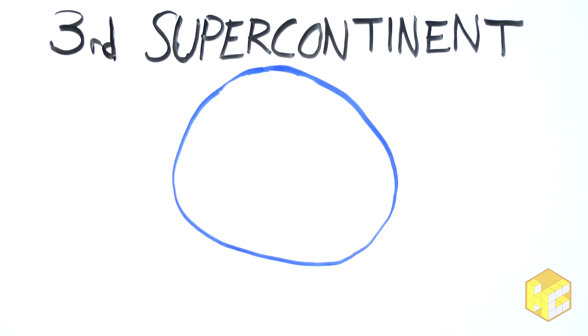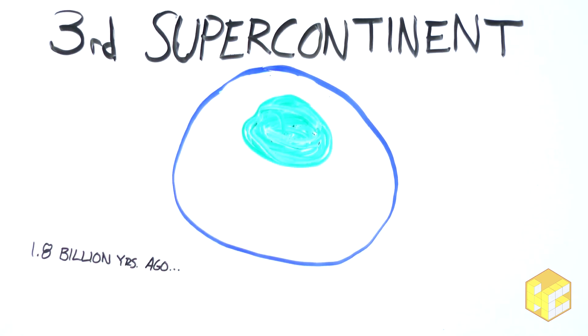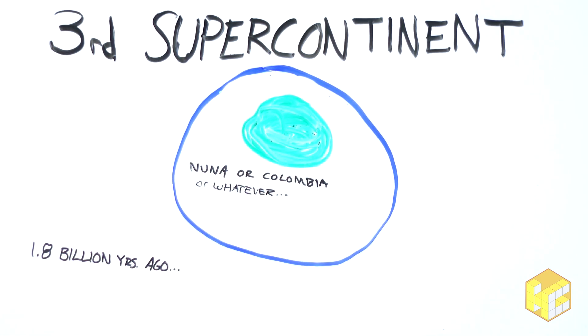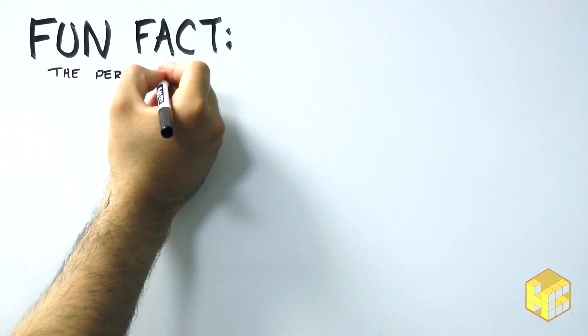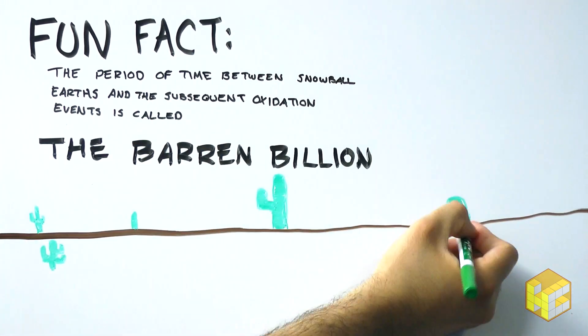As the mantle cooled and the sun warmed, it changed the conditions necessary to create a snowball Earth. So when the next supercontinent formed 1.8 billion years ago, the climate remained relatively stable. This supercontinent is called Nuna by some and Columbia by others. So pick your favorite and run with it. Fun fact! The period between Snowball Earths is known as the Barren Billion.